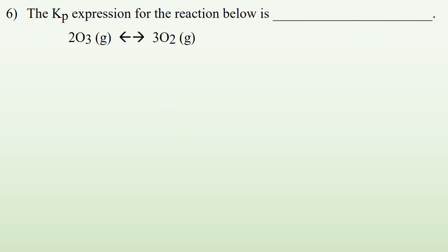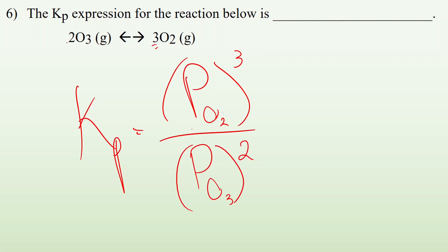Number six, the Kp expression for the reaction below is what? So again, it's just a matter of Kp equals the pressure of the product. So I got O2 as my only product, and it's getting cubed, because of that 3, divided by the pressure of the reactants, in this case O3, which is going to get squared, because its coefficient in front of that is a 2.